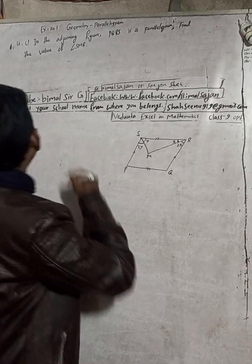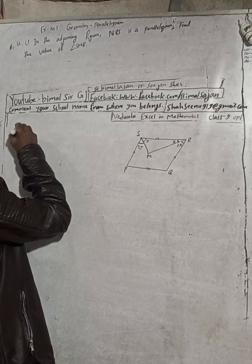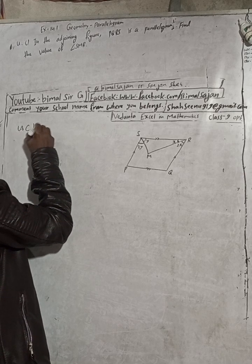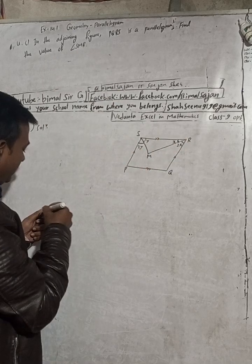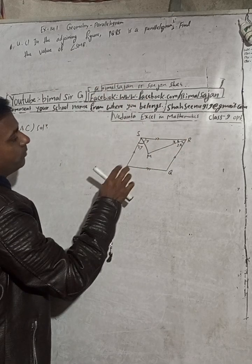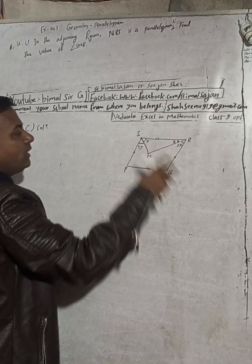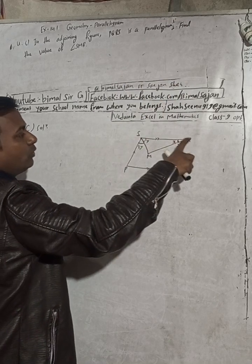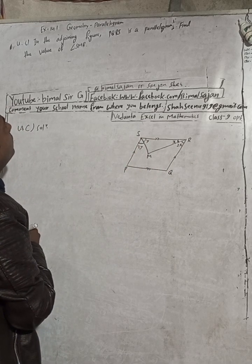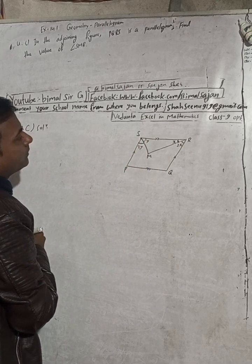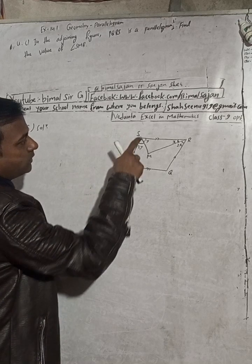The question is here for part C solution. In the adjoining figure, PQRS is a parallelogram — this side is parallel to this side, and this side is parallel to this side. We need to find the value of angle SMR.